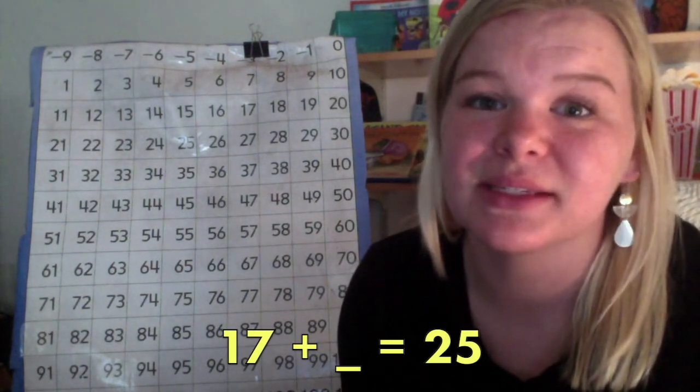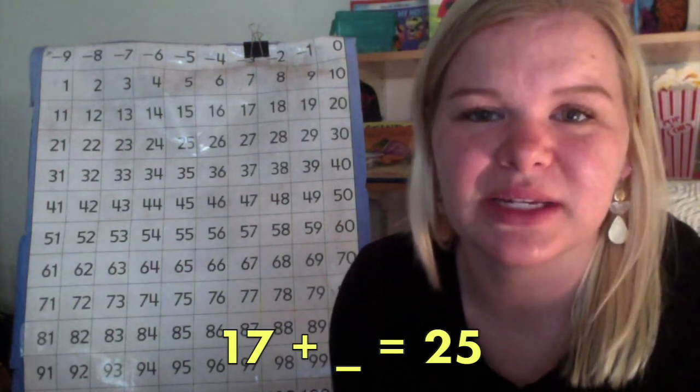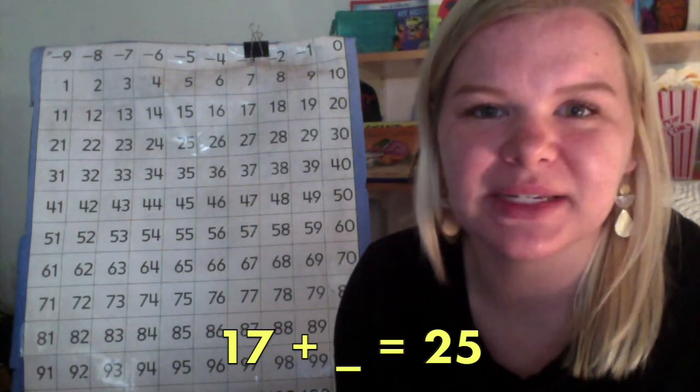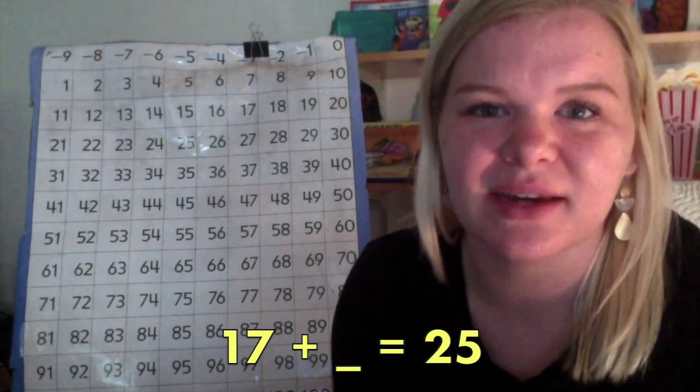We can also use our number grid to help us solve problems where there is a number missing. Just like this one. 17 plus something equals 25. So, we need to figure out how many hops it takes to get from 17 to 25.